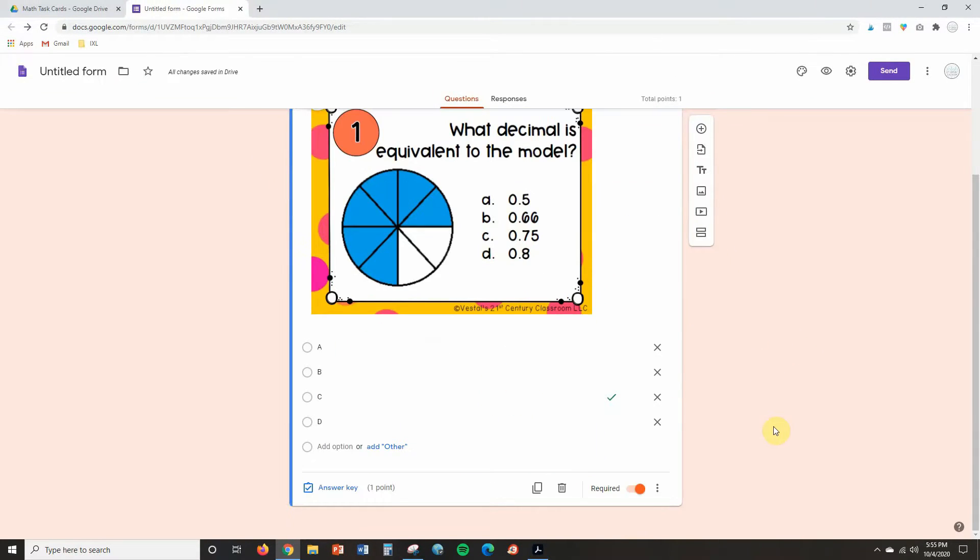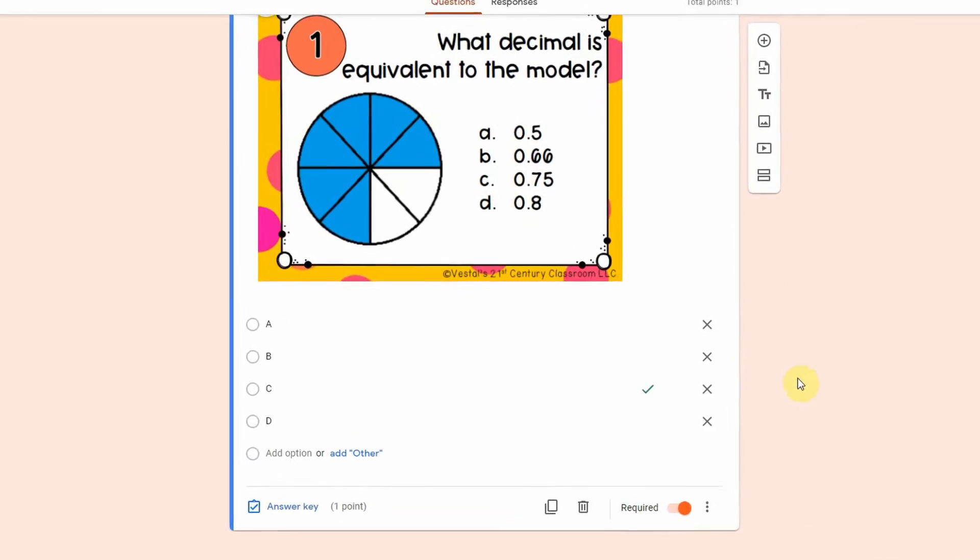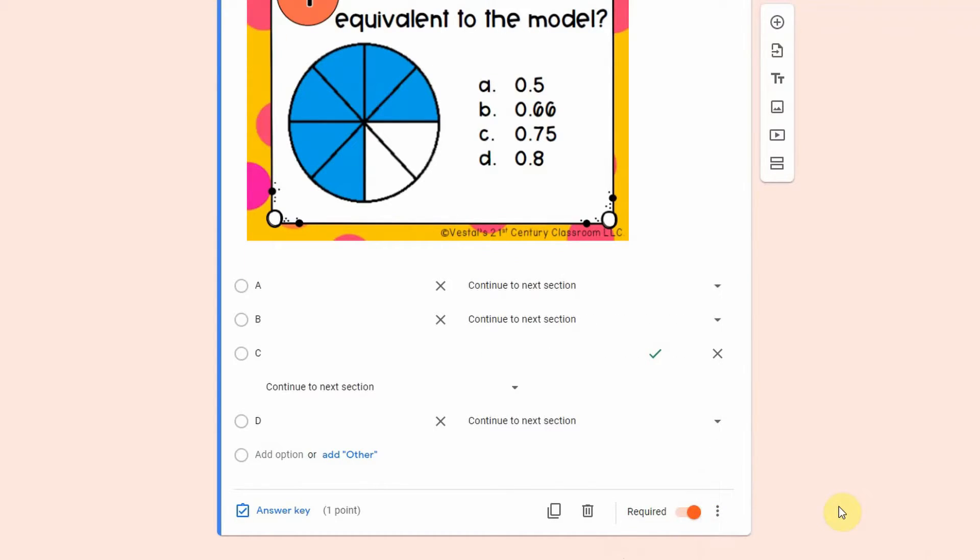So the correct answer is C and I'm going to click done. Now if you want students to answer this question before they move on to the next question you can do that by clicking these three little dots here and then say go to section based on answer.